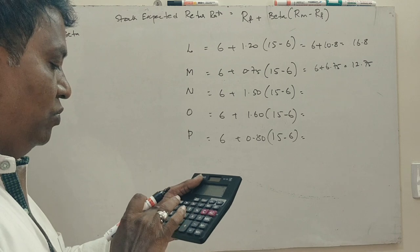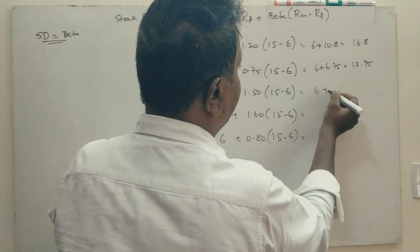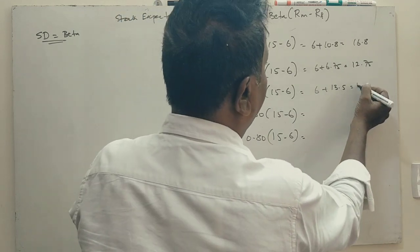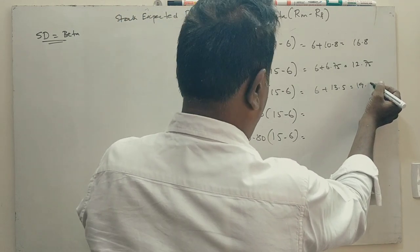Next, 9 into 1.5. So 6 plus 13.5, you get 19.50.